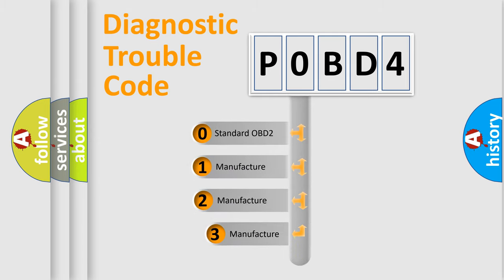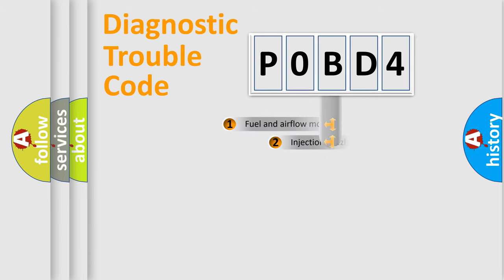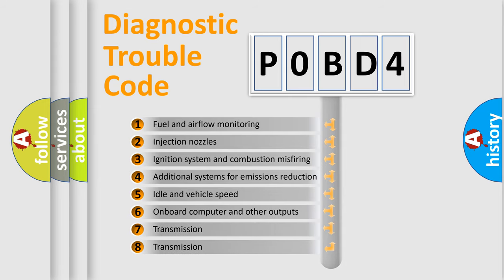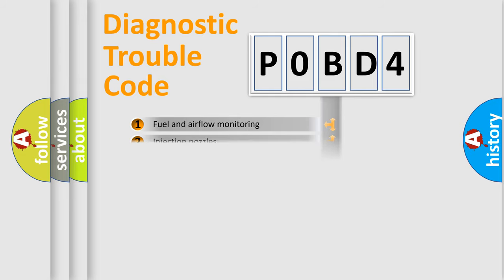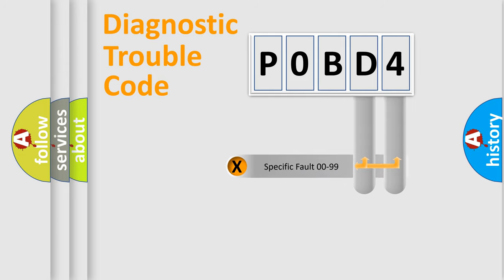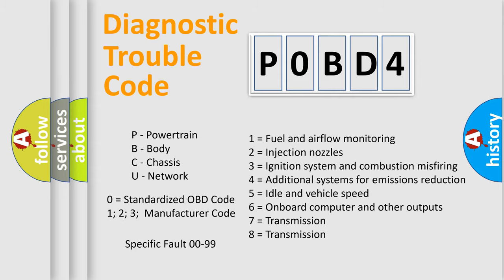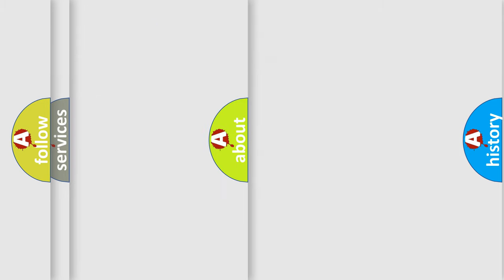If the second character is expressed as zero, it is a standardized error. In the case of numbers 1, 2, or 3, it is a manufacturer-specific error. The third character specifies a subset of errors. The distribution shown is valid only for standardized DTC codes. Only the last two characters define the specific fault of the group. Let's not forget that such a division is valid only if the second character code is expressed by the number zero.